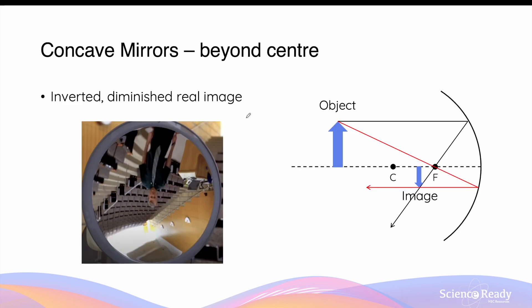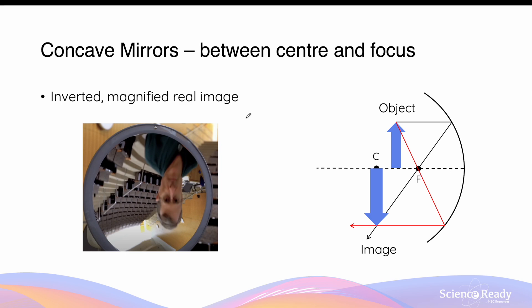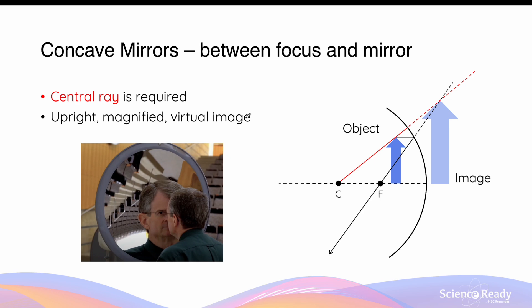So you can see that for concave mirrors, the position of the object is very important. When the object is in front of the center, the image formed is inverted, diminished and is a real image. As it approaches the mirror and is placed between the center and the focus, the image is still inverted, but now becomes magnified and it is still a real image. When the object is between the focus and right in front of the concave mirror, the object is upright, no longer inverted, it is magnified and it is a virtual image.